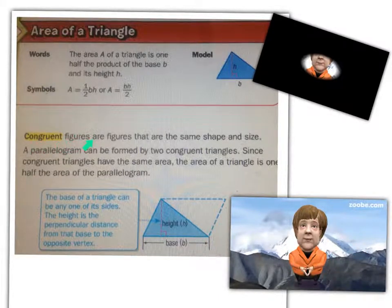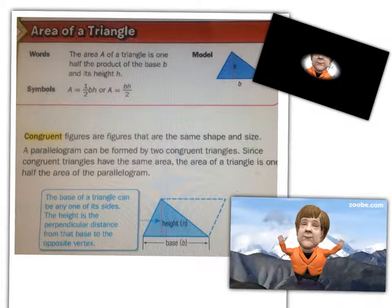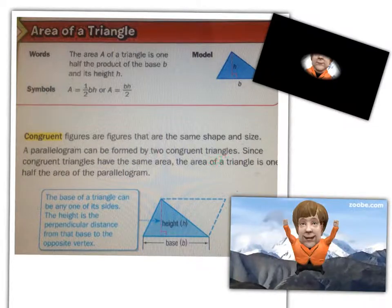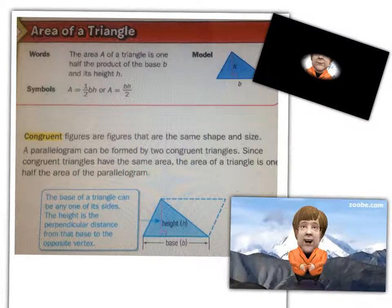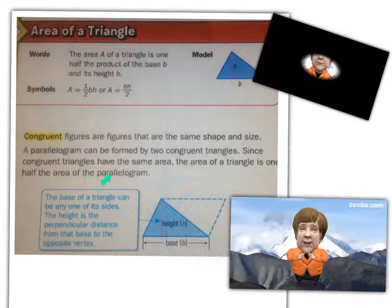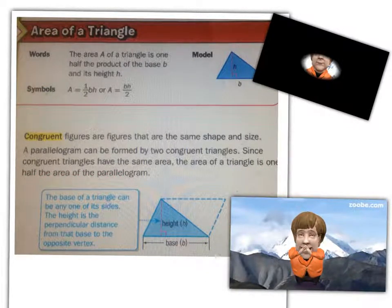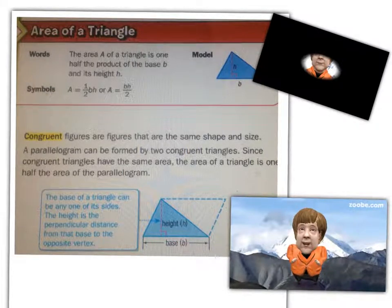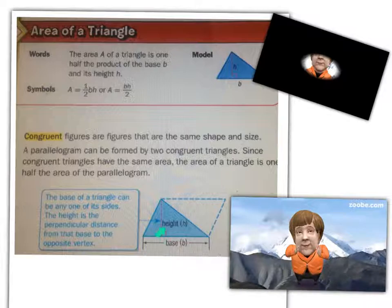Congruent figures are figures that are the same shape and size. A parallelogram can be formed by two congruent triangles. Since congruent triangles have the same area, the area of a triangle is one half the area of the parallelogram. The base of a triangle can be any of its sides. The height is the perpendicular distance from the base to the opposite vertex.